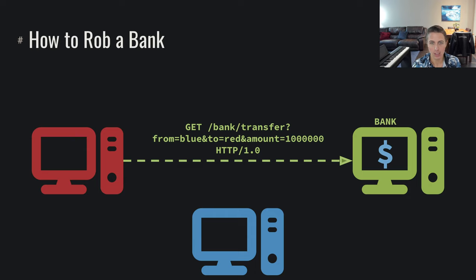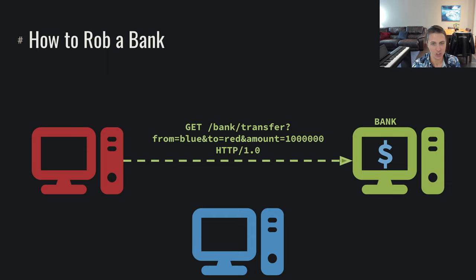In this example, we can see that this red computer is making a request to the bank and they're saying, I would like you to do a bank transfer from blue to red — a million dollars. So clearly this is not good. This request is originating from red, and they're basically saying I would like blue to give me a million dollars. Obviously the bank, if it's a secure bank, would not allow this transaction to occur, because who are you to dictate that blue should give you a million dollars?